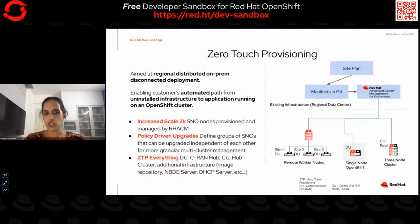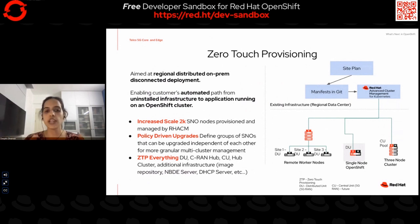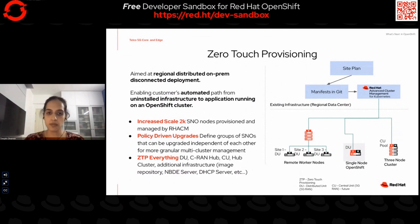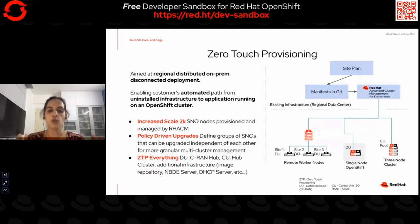Zero-touch provisioning — ZTP — is a way to deploy OpenShift clusters at scale in an automated way via ACM. It uses a declarative GitOps approach with steps in place to deploy OpenShift on new compact topologies. We're continuously looking to evolve and enhance this specifically for the edge. We're looking to enhance this at scale level — supporting more than 2,000 SNOs provisioned and managed by a single instance of ACM very soon. Enabling policy-based upgrades by defining groups of SNOs that can be upgraded independently for more granular multi-cluster management. Ideally going forward, we would like to ZTP everything — the DUs, the CRAN hubs, the additional infrastructure needed — which will make our life easier to deploy, manage, and upgrade clusters at the edge with ease and scale.